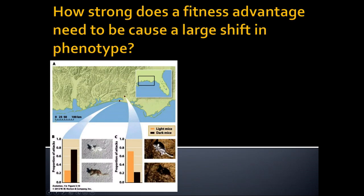Scientists do observational studies — they might set out decoys, do experiments, manipulate them — and look at how often light-coated decoys are attacked compared to dark-coated decoys. They gather data and do analysis to come up with measurements of relative fitness levels. Even tiny fitness advantages can cause a large shift in phenotype in a population over time.